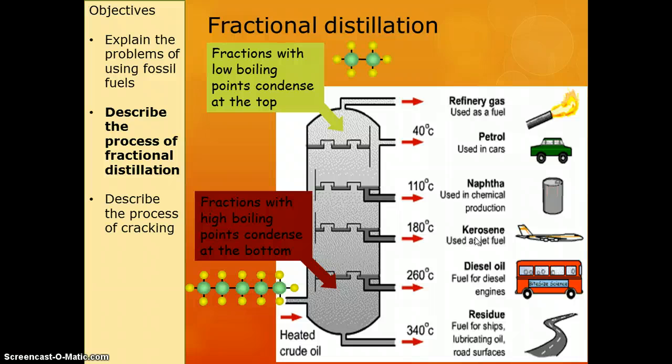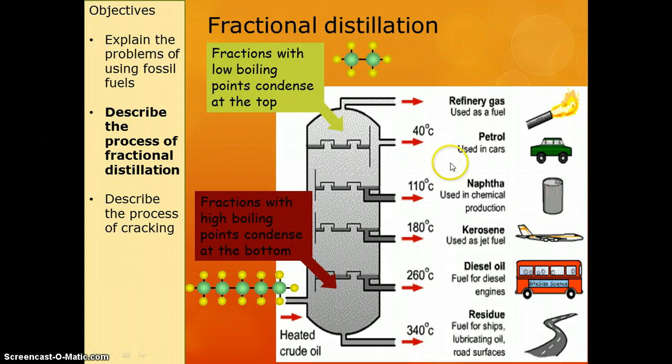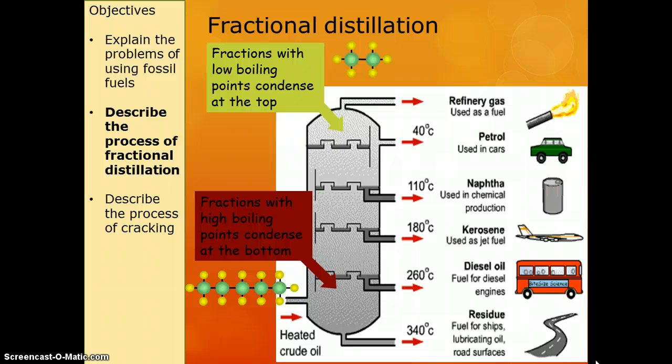The disappointing thing about crude oil is that the most useful fractions are these ones up at the top, so petrol and naphtha we would love way more of, but there isn't actually very much of those in crude oil. The ones we don't use as much, like the bitumen, there are lots of. So being ever industrious, we found a way to turn those long chain hydrocarbons that we've got too many of into the more useful short hydrocarbons.